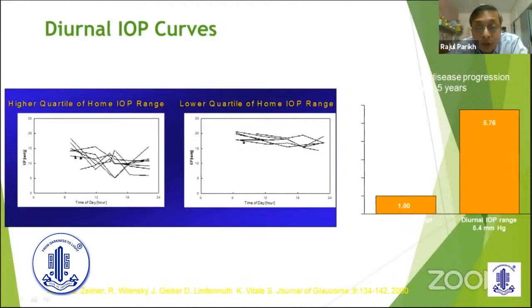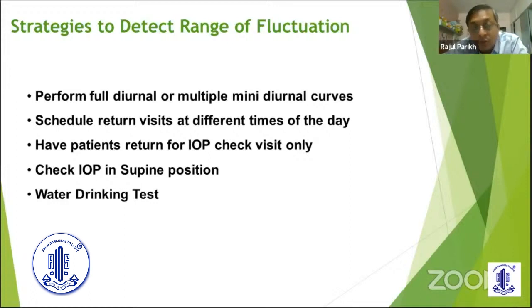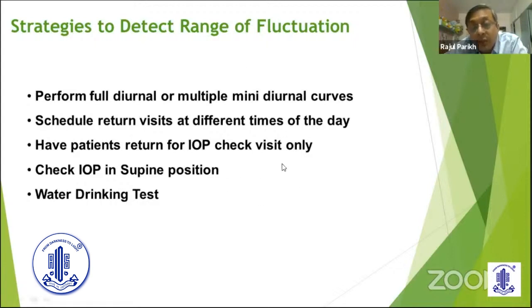In fact, diurnal fluctuation risk is five to six times more compared to patients having low fluctuation. So IOP fluctuation is an independent risk factor. Not every patient requires a full diurnal or mini-diurnal curve, but what we can do in routine practice is check the pressure at different times of the day — sometimes calling the patient in the morning, sometimes in the afternoon, sometimes in the evening — and we get a fair idea of this fluctuation and also of long-term peak fluctuation.